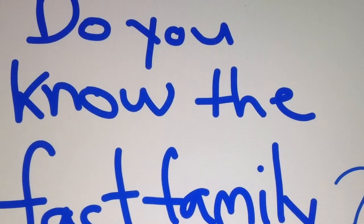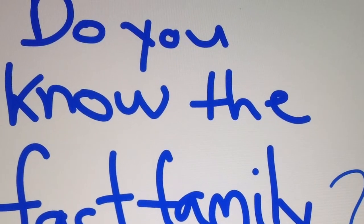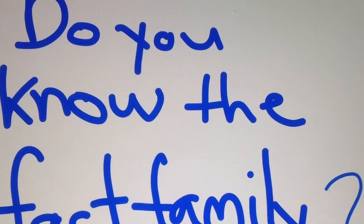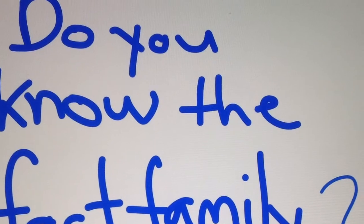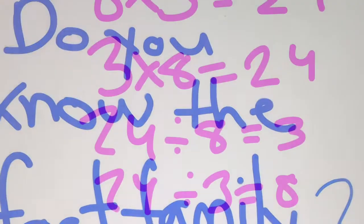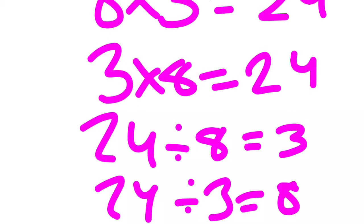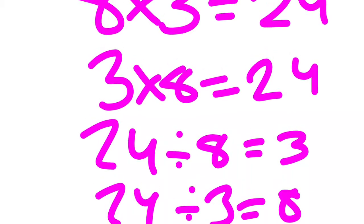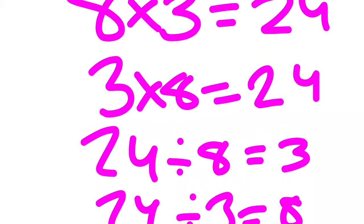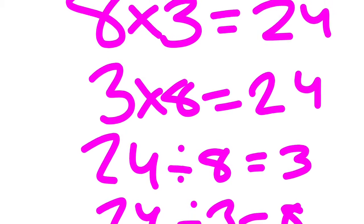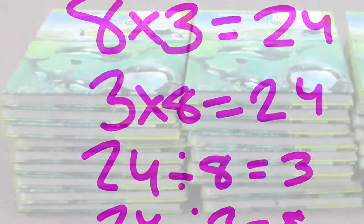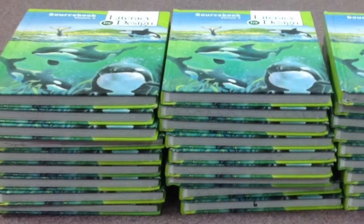Do you know the fact family? Eight times three equals twenty-four. Three times eight equals twenty-four. Twenty-four divided by eight equals three. And twenty-four divided by three equals eight.